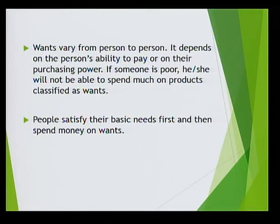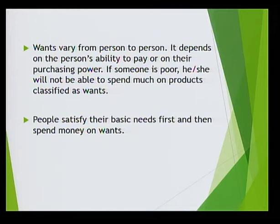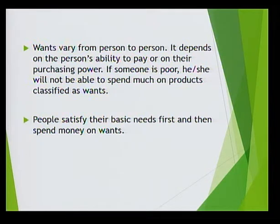Wants vary from person to person. It depends on the person's ability to pay, or on their purchasing power. If someone is poor, he or she will not spend too much on products classified as wants. For example, a person may spend 1,000 rupees on a basic iPhone, whereas someone with more purchasing power may want to spend 10,000 rupees. People satisfy their basic needs first, and then they spend money on wants.